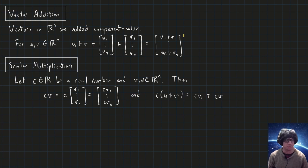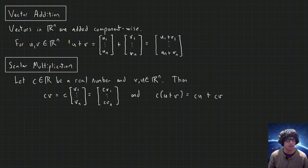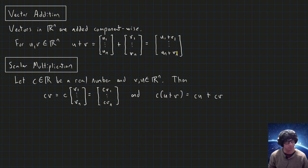Let's define the basic addition and scalar multiplication operations on vectors in Rn. Starting with vector addition: if we have two vectors u and v in Rn, we add them component-wise. The sum u plus v has first entry u1 plus v1, second entry u2 plus v2, and so on down to un plus vn. It's what you'd expect from addition.